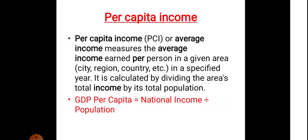Then, per capita income. Per capita income measures the average income earned per person in a given area, city, region, or country in a specified year. It is calculated by dividing the area's total income by its total population. The formula is: GDP per capita equals national income of a country divided by population.